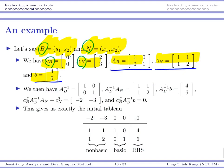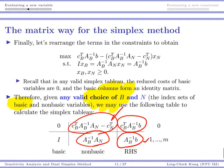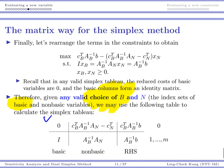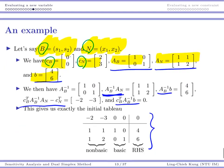These four quantities — Ab⁻¹An, Ab⁻¹b, the reduced costs, and the objective value — give us exactly the initial simplex tableau. Ignoring the matrix notation, what we are doing is computing those four things and inputting them into the tableau. That is how we construct the tableau.